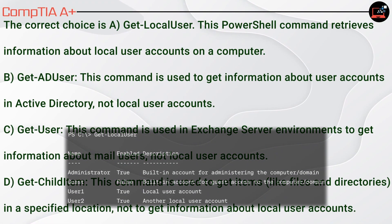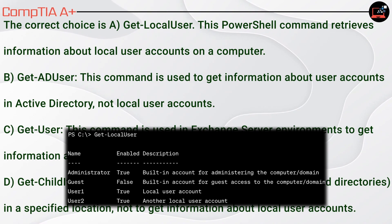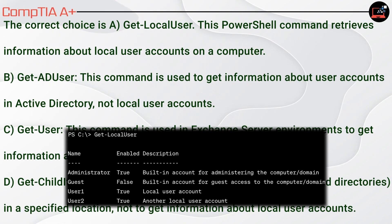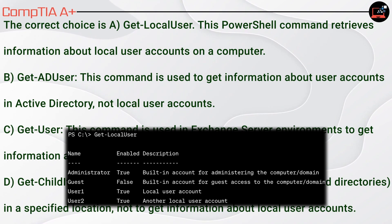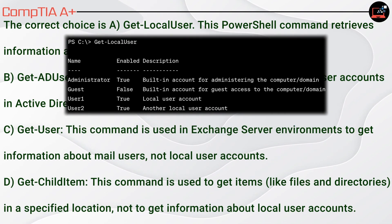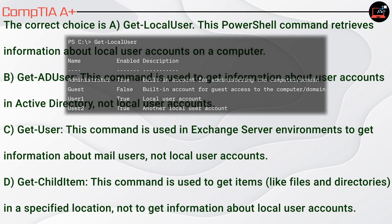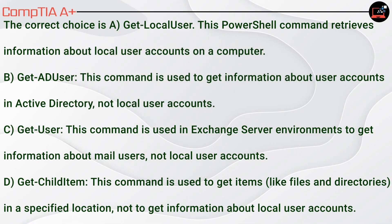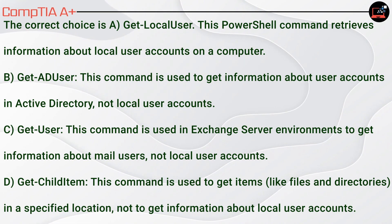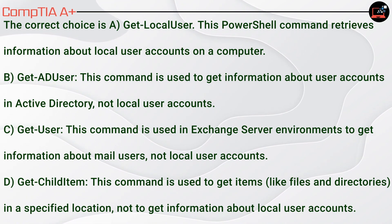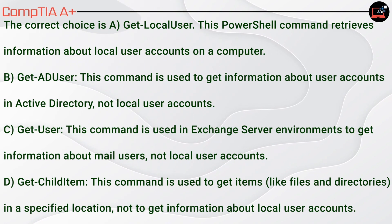The correct choice is A. Get-LocalUser. This PowerShell command retrieves information about local user accounts on a computer. B. Get-ADUser is used to get information about user accounts in Active Directory, not local user accounts. C. Get-User is used in Exchange Server environments to get information about mail users, not local user accounts. D. Get-ChildItem is used to get items like files and directories in a specified location, not to get information about local user accounts.